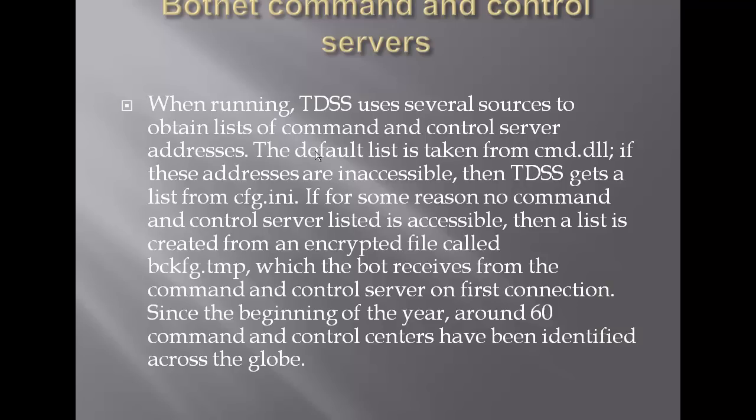When running, TDSS uses several sources to obtain lists of command and control server addresses. The default list is taken from cmd.dll. If these addresses are inaccessible, then TDSS gets a list from cfg.ini, the config file. If no command and control server list is accessible, that list is created from an encrypted file called bcfg.tmp, which the bot receives from the command and control server on first connection. Since the beginning of the year, around 60 command and control centers have been identified across the globe.